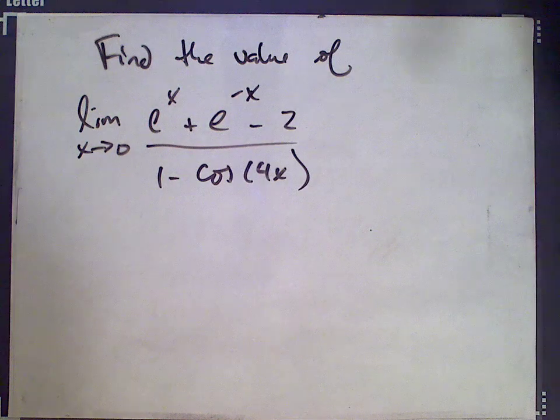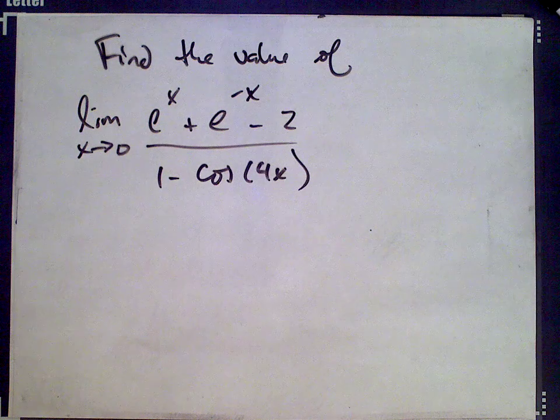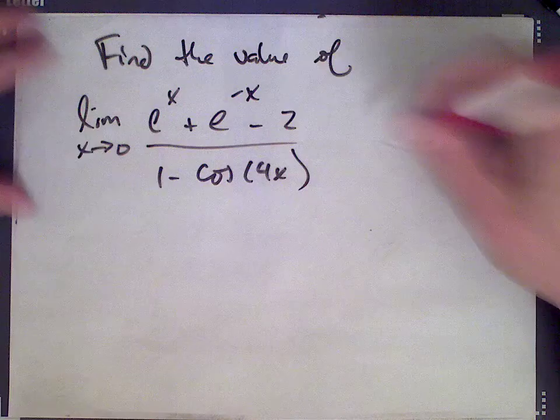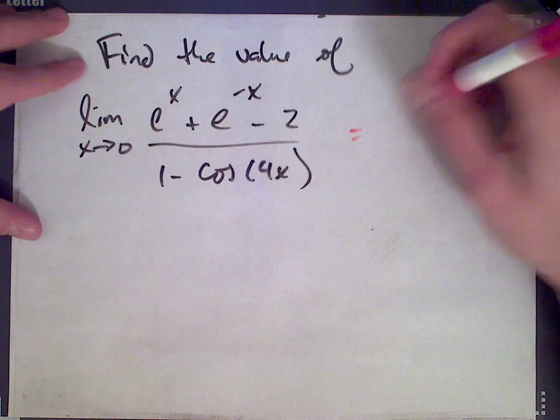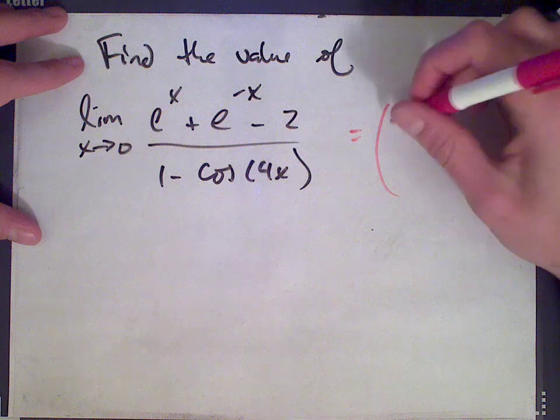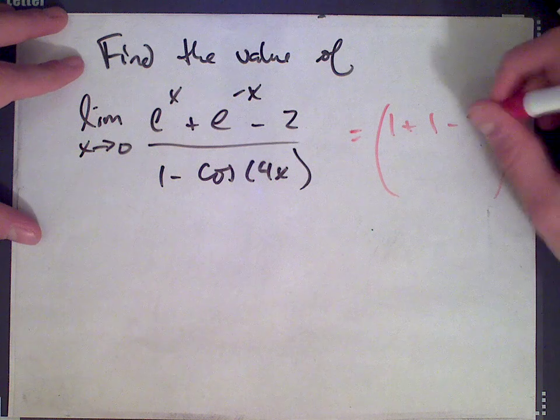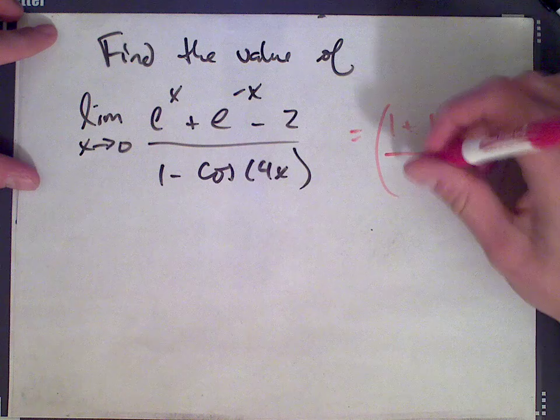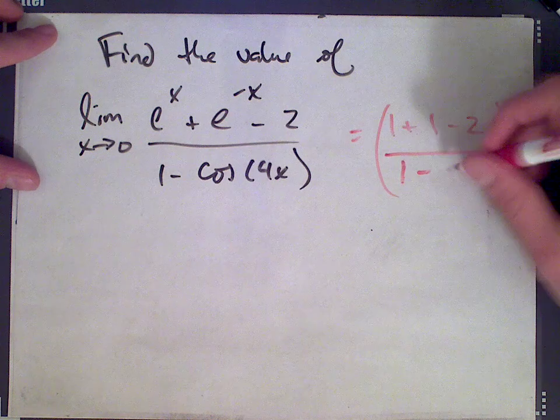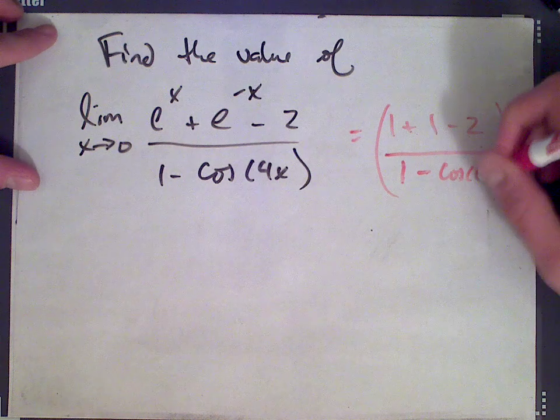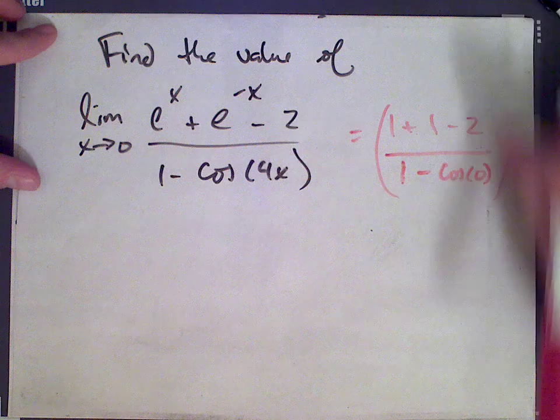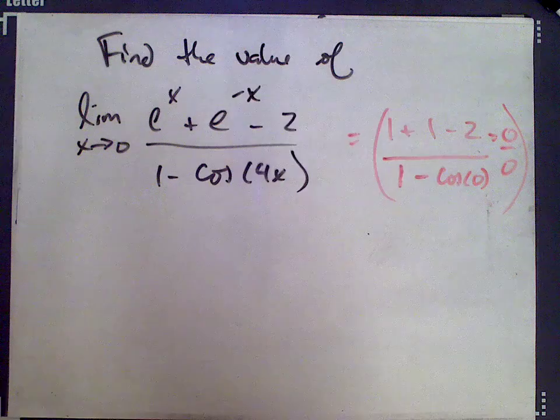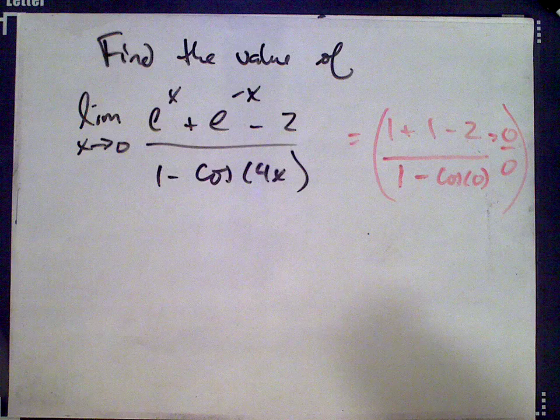The first thing you want to do when evaluating a limit is plug in the value that x is approaching. When you plug it in, we get 1 plus 1 minus 2. x is 0, so e to the x and e to the negative x are 1, divided by 1 minus cos of 0, so this is 0 over 0. It's an indeterminate form which means we need to use L'Hopital's rule.